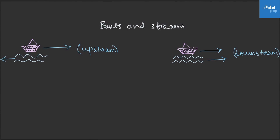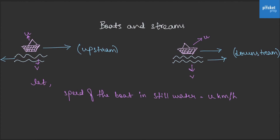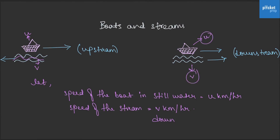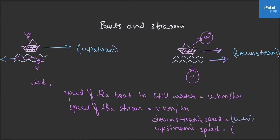Let us assume the speed of the boat to be u and the speed of the stream to be v. Speed of the boat in still water is u kilometers per hour and speed of the stream is v. The formula for downstream speed will be u plus v, as they are both traveling in the same direction — their speeds add. So downstream speed is u plus v. Coming to upstream speed, it will be u minus v as they are in opposite directions.